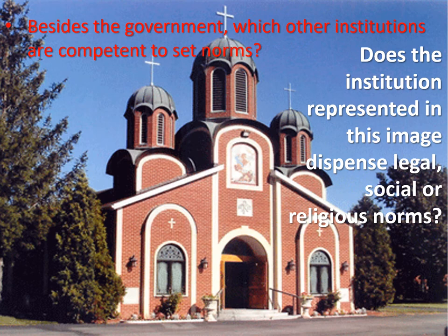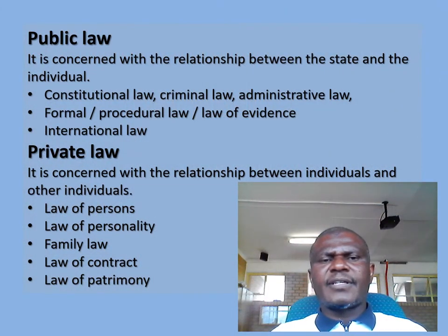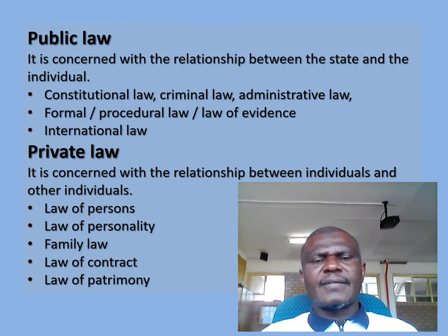Besides the government, which other institutions are competent to set norms? We have religious groupings, certainly, and we have individuals. Looking at the picture here, does the institution represented in this image have the competence to set and dispense norms, and which types of norms does it dispense — are they legal, social, or religious? This building seems like a religious building, a place where people gather for worship. Certainly this kind of institution does not dispense legal norms, but it dispenses religious norms.